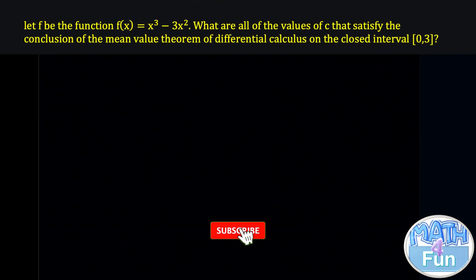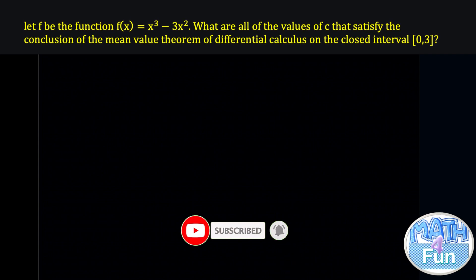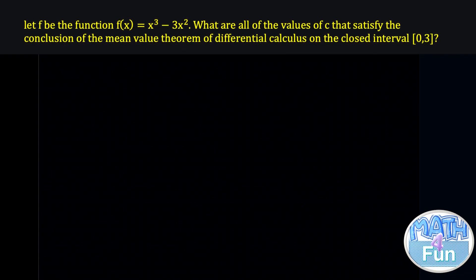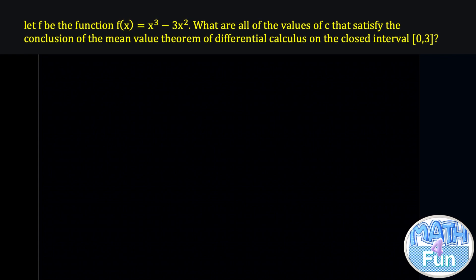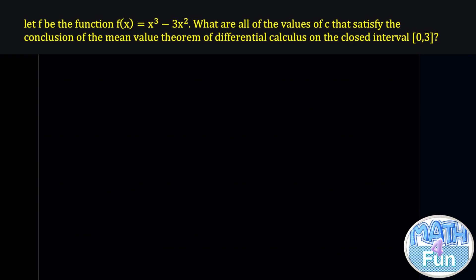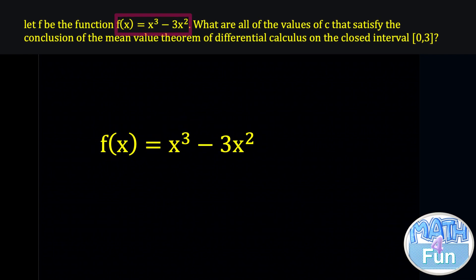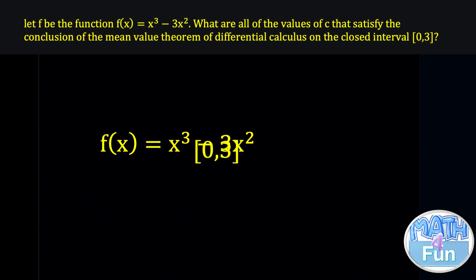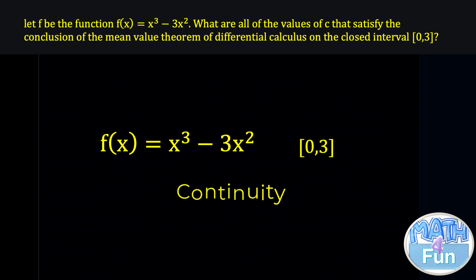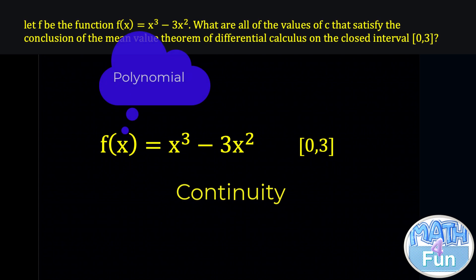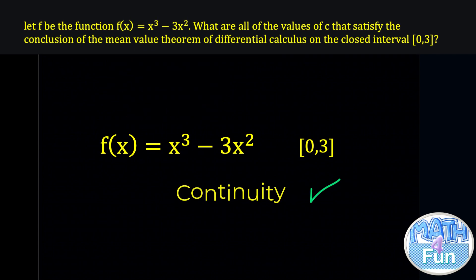Look at this question. Let f be the function f of x equal to x cubed minus 3x squared. What are all the values of c that satisfy the conclusion of the mean value theorem of differential calculus on the closed interval 0 to 3? To apply the mean value theorem, we first verify the conditions. First condition: continuity. The function f of x is a polynomial, and polynomial functions are continuous everywhere. Therefore f of x is continuous on the interval.